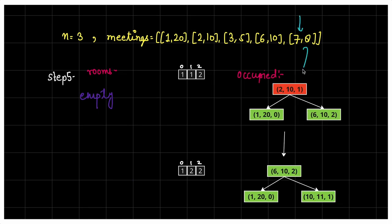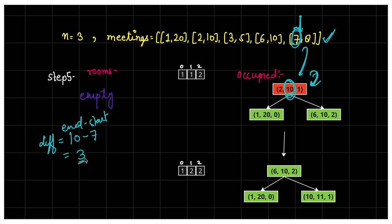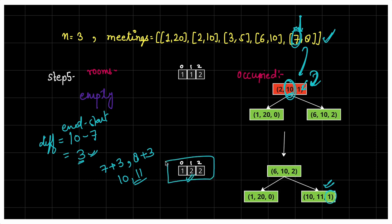Meeting 7,8 arrives. The top of occupied has end time 10 (room 1), which is greater than start time 7 — so no room is free. Available rooms heap is empty. So this meeting must be delayed. We pop the top meeting from occupied (end=10, room=1). Delay = end_time - start_time = 10 - 7 = 3. So the meeting starts at 7+3=10 and ends at 8+3=11, scheduled in room 1. Increment room 1's count. Final counts: room 0 has 1, room 1 has 2, room 2 has 2 — room 1 is returned as it has the maximum (and it's the lowest room with that max).